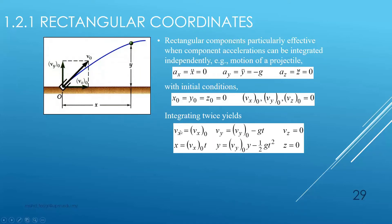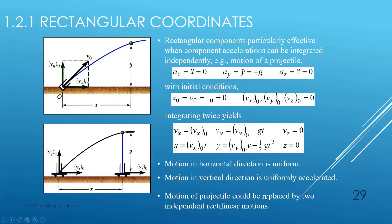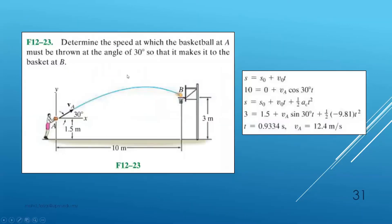Integrating twice, we can express vy as vy₀ minus g·t, and integrating again gives y = vy₀·t minus ½·g·t². Motion in the horizontal direction is uniform, while motion in the vertical direction is uniformly accelerated due to gravity. Therefore, projectile motion can be replaced by two independent rectilinear motions.